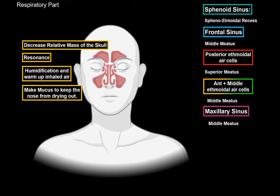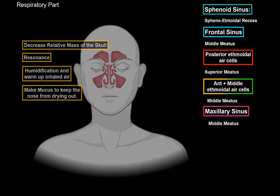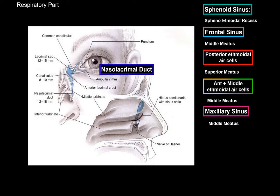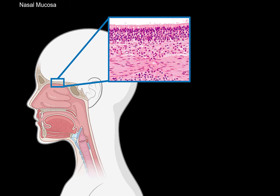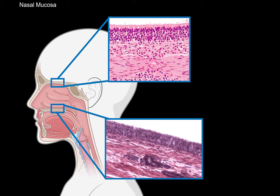One of the most important functions of the sinuses is to produce mucus to keep the nose from drying out. Now there is one more structure that opens into the nasal cavity — that's the lacrimal duct, or the nasolacrimal duct, which leads the tears from the eyes down to the inferior meatus. Now let's talk about the nasal mucosa, or the walls of the nasal cavity. Let's take one section from the olfactory part and one section from the respiratory part.